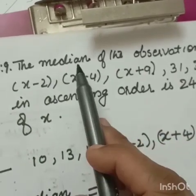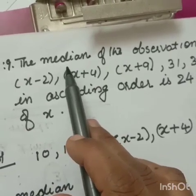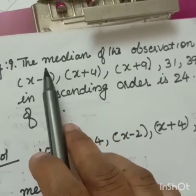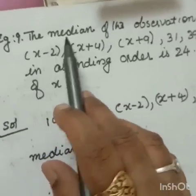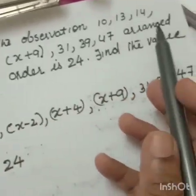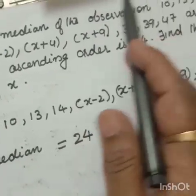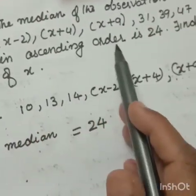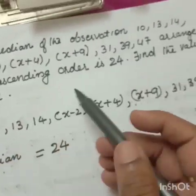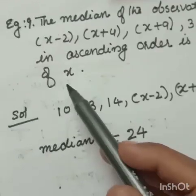You have to find the median. Always you want median you have to arrange the data in ascending order or descending order. But in the question, the median of this observation are arranged in ascending order. Already given in ascending order. And median also got 24. Find the value of x.